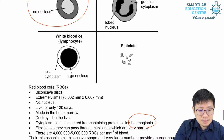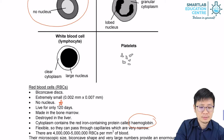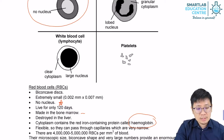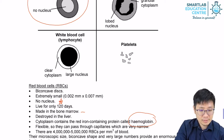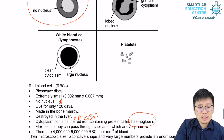Since the red blood cells sacrifice their nucleus for the sake of carrying more oxygen, they can't last long — they survive for only about 120 days. They are born in the bone marrow, which are the inner parts of your long bones such as your arm bone or thigh bone. When a red blood cell has fulfilled its function and it's time to be destroyed, it will be destroyed in the liver or the spleen. The red blood cells are also quite flexible, which allows them to squeeze through capillaries, which are very narrow.